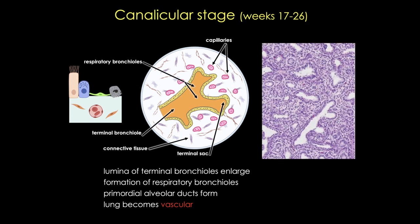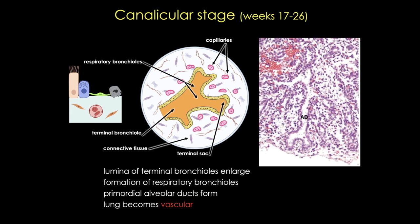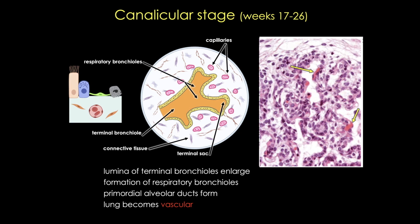In this section from the canalicular stage, you can see a terminal bronchiole with its relatively cuboidal epithelium and numerous respiratory bronchioles. At increased magnification, you can see an alveolar duct with a thinner epithelium, and now you can start to see some capillaries. Looking right at the end of this stage overlapping into the terminal sac stage, you can much better appreciate the capillaries closely opposed to that thinner epithelium of the terminal sac. If a fetus is born at the end of this period at 26 weeks, they may survive with intensive care because some terminal sacs have already formed. However, most premature neonates don't survive because the alveolar surface area is still insufficient and the lung vascularity is underdeveloped.